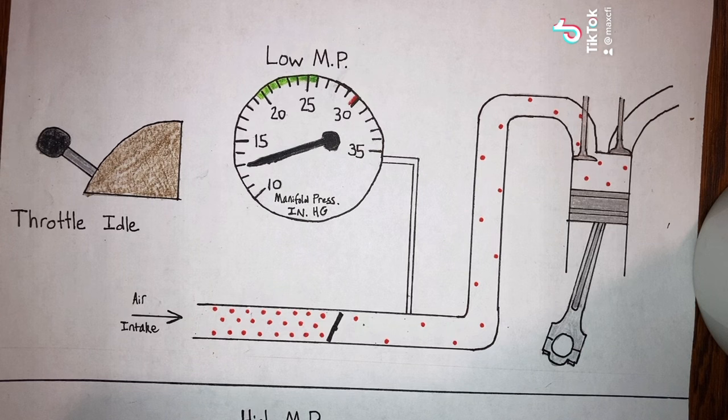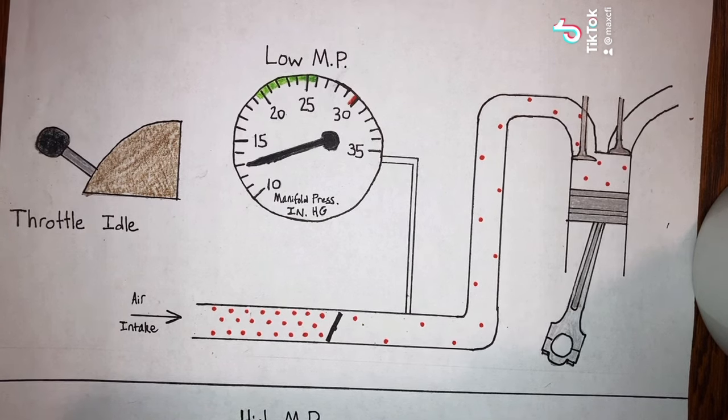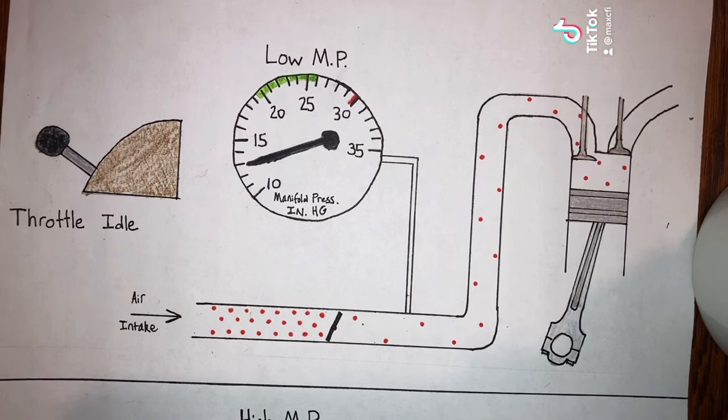In airplanes with constant speed propellers, however, the throttle can be moved, resulting in power changes without any RPM change. These airplanes are equipped with a manifold pressure gauge so engine power can be roughly monitored as well as RPMs.